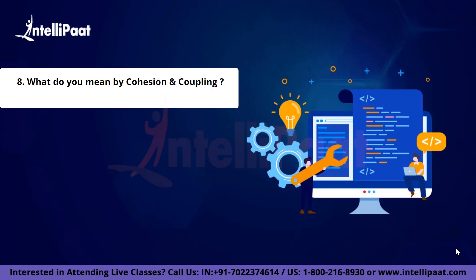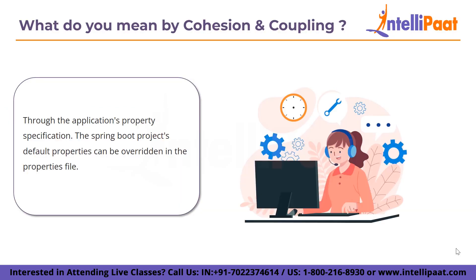Question eight: what do you mean by cohesion and coupling? Coupling is a relationship between software modules A and B, describing the degree to which one module depends on or engages with the other. Couplings can be divided into three groups: tightly linked, loosely coupled, and uncoupled. Loose coupling, which can be accomplished through interfaces, is a preferred type. Cohesion is described as a relationship between two or more components of a module that work together to achieve a common goal. A module with high cohesion can carry out a particular task effectively without requiring communication with other modules.